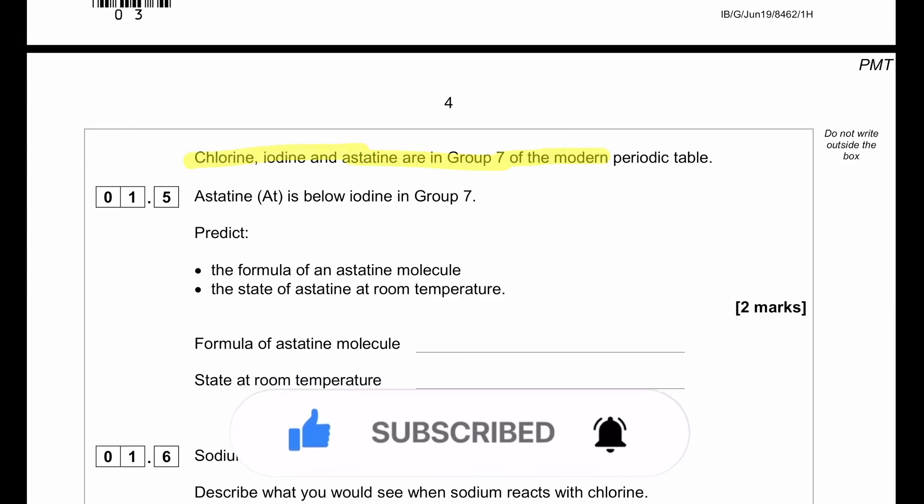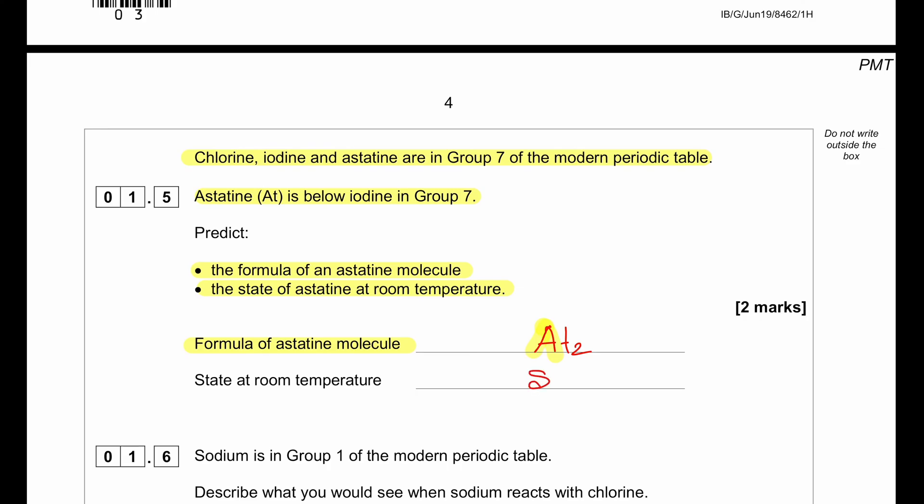Chlorine, iodine, and astatine are in group 7 of the modern periodic table. Astatine is below iodine in group 7. The formula of an astatine molecule will be At2, similar to that of fluorine, chlorine, and bromine. When it comes to the state at room temperature, iodine is solid at room temperature. Since astatine is below iodine, it should be solid at room temperature.